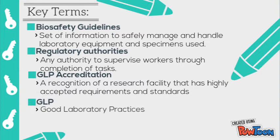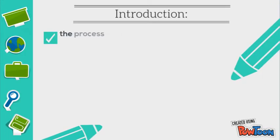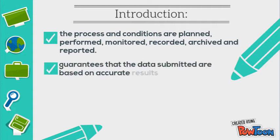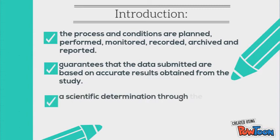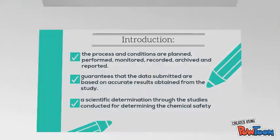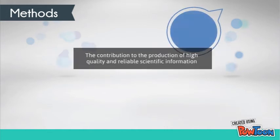GLP, Good Laboratory Practice. According to the OECD, it is a process and conditions under which non-clinical health and environmental safety studies are planned, performed, monitored, reported, and achieved. It guarantees that the data submitted are recent, accurate results obtained through the study, and it provides scientific determination to studies conducted for determining chemical safety.